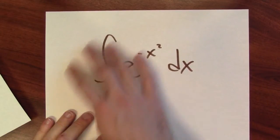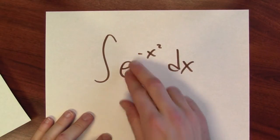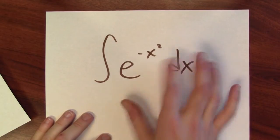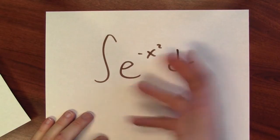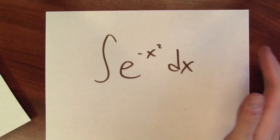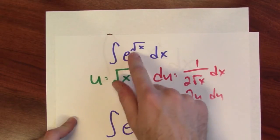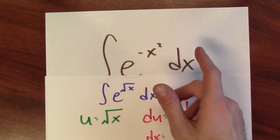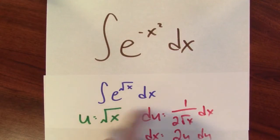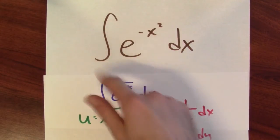Now, contrast that with, say, this integration problem, the integral of e to the negative x squared dx. This is an integration problem that I can't solve using the functions that I have at hand. And yet, this problem looks really similar to the original problem here, e to the square root of x. It's e to some power of x. So, you'd think that if we can solve this one, we should also be able to solve this one.